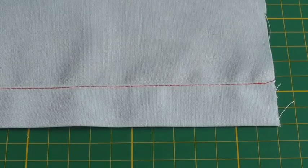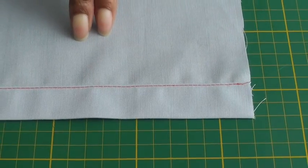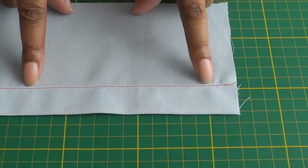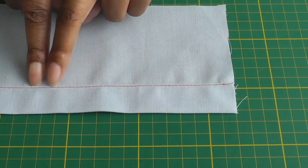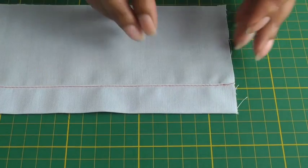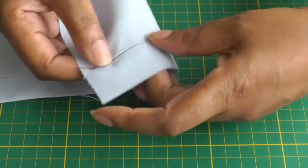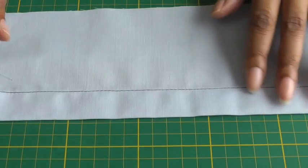I've now sewn the double fold hem. This is the wrong side of the garment and this is what it looks like, a very narrow stitching to the edge, and the right side looks like that.